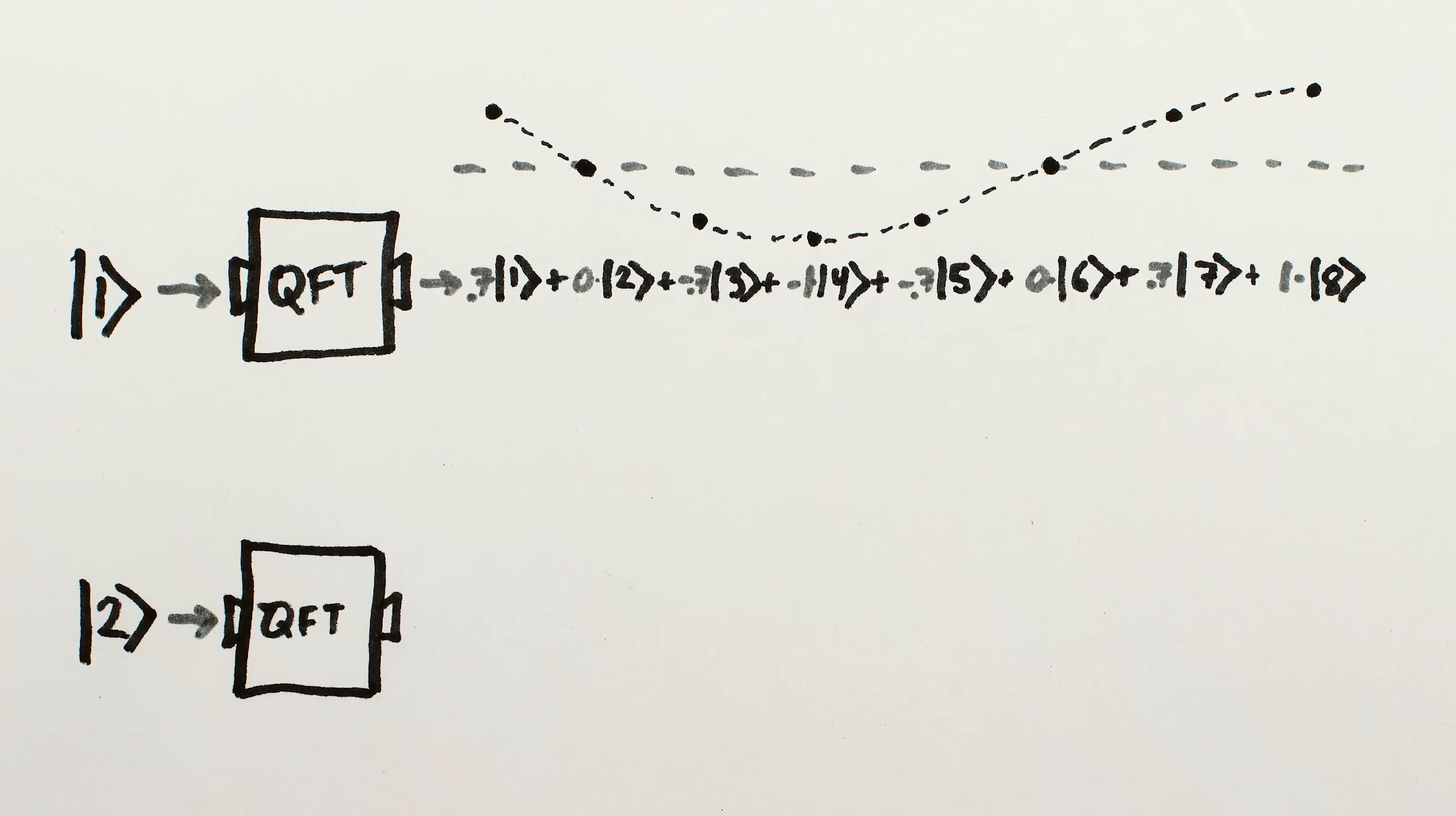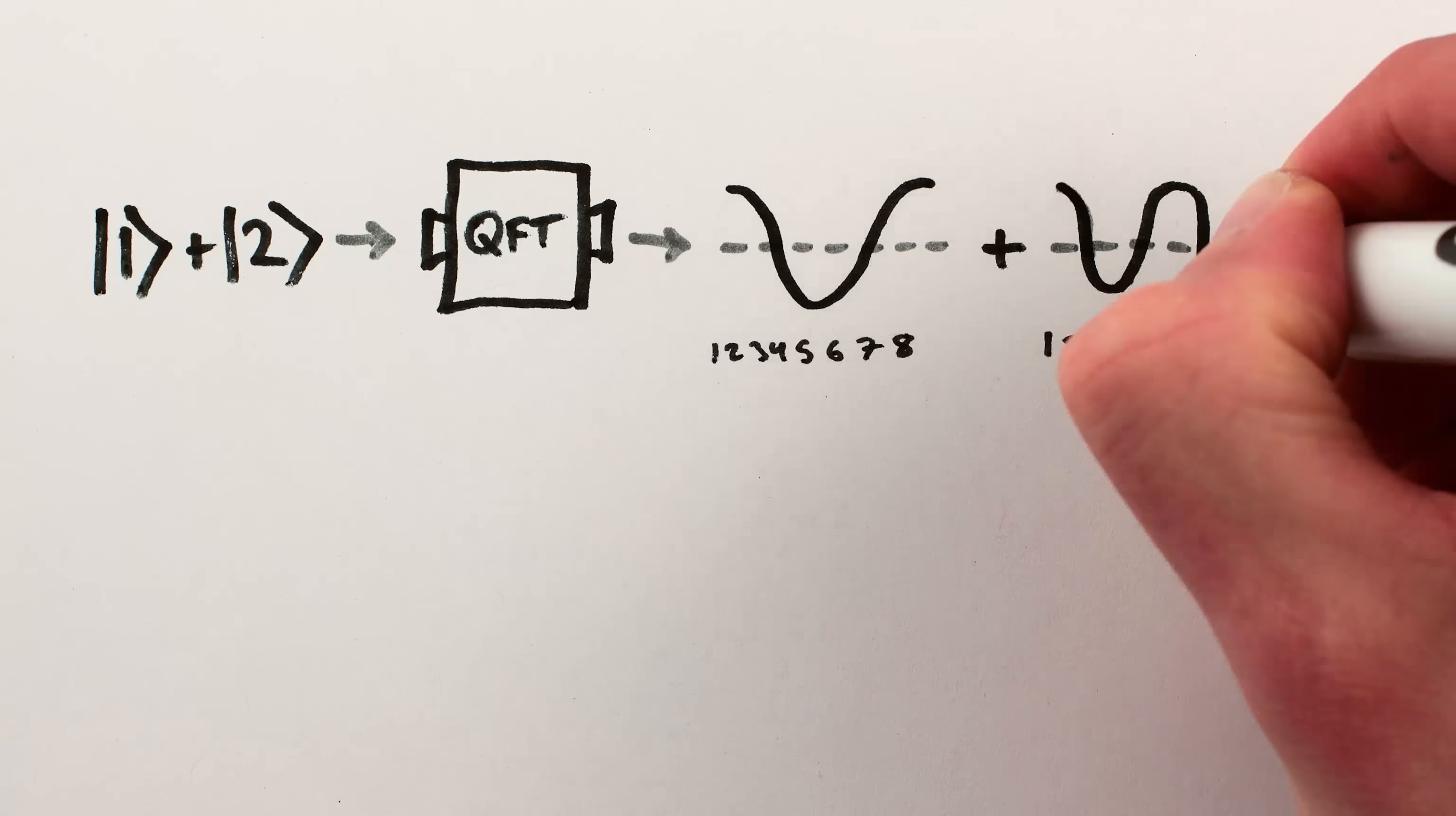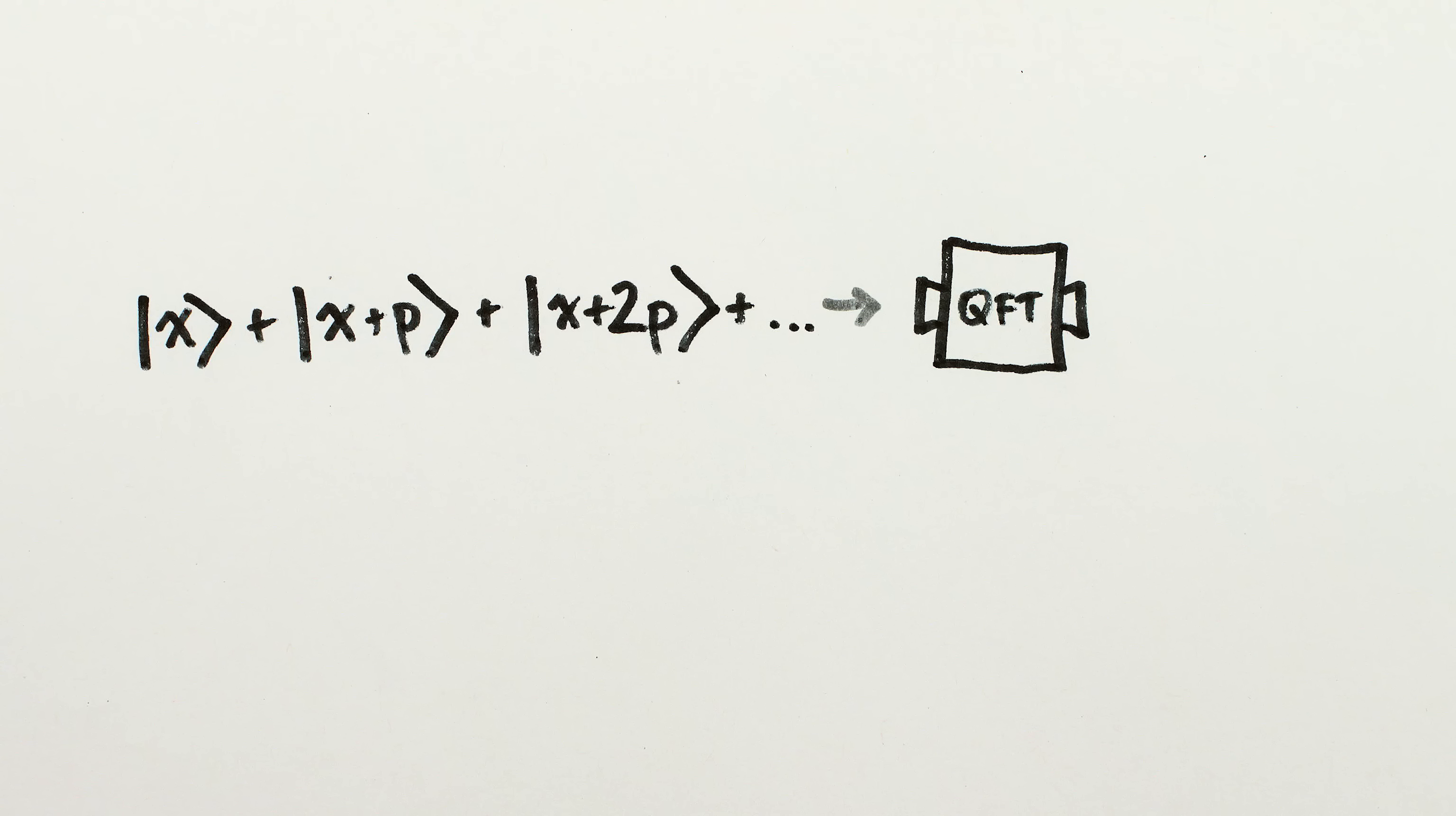If you put in a higher number, you get a sine wave style superposition of all other numbers, but with a higher frequency. And the magic is that when you put in a superposition of numbers, you get out a superposition of superpositions and the sine waves add together, or subtract and cancel out. And it happens that if you put in a superposition of numbers that are all separated by an amount P, all those sine waves interfere so that what you get out is the single quantum state representing 1 over P.